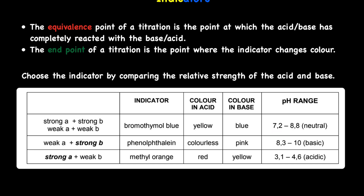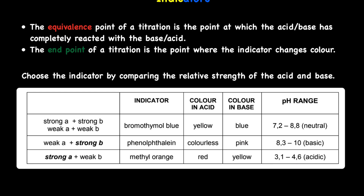Phenolphthalein — write it in full when asked. When you have a weak acid and a strong base, we use phenolphthalein. Its color is colorless in an acid and pink in a base. When the acid is strong and the base is weak, we use methyl orange. Methyl orange is yellow in an acid. To summarize: strong acid and weak base — methyl orange; strong base and weak acid — phenolphthalein.